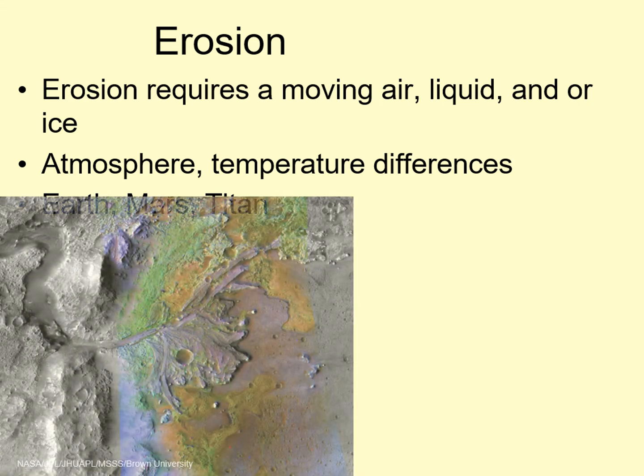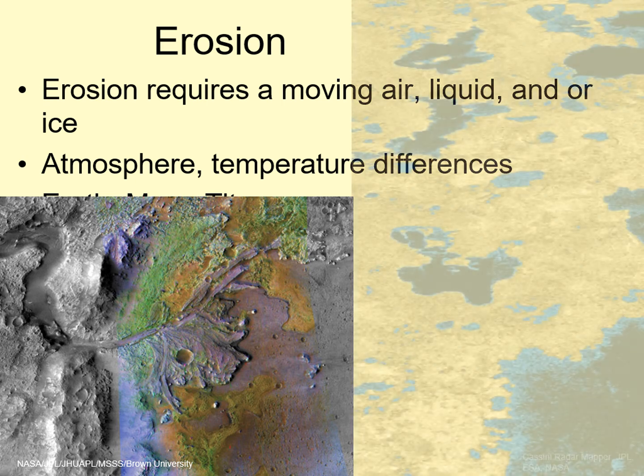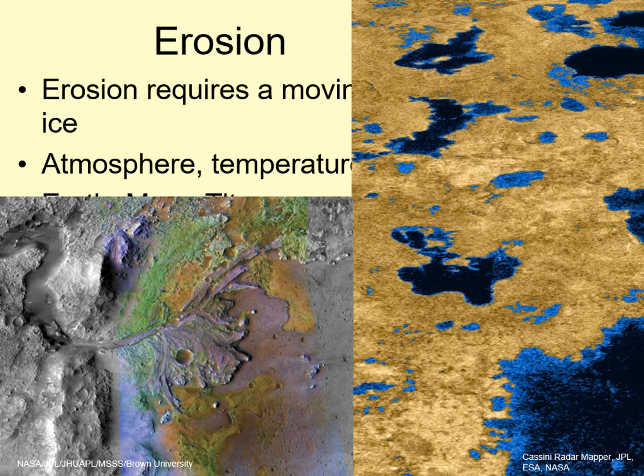Mars has a long history of wind erosion and shows signs that in the past it had substantial water erosion as well. Titan is the only moon with a substantial atmosphere. It has lakes and rivers of liquid ethane, as well as wind-blown dunes made of grains of hydrocarbon ice.